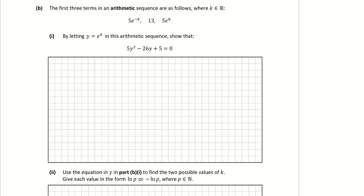Part b, part 1: the first three terms of an arithmetic sequence are given. By letting y equal e to the power of k, show the required result. An arithmetic sequence has the same constant difference between each term. The sequence starts as 5e to the power of minus k, followed by 13, followed by 5e to the k.